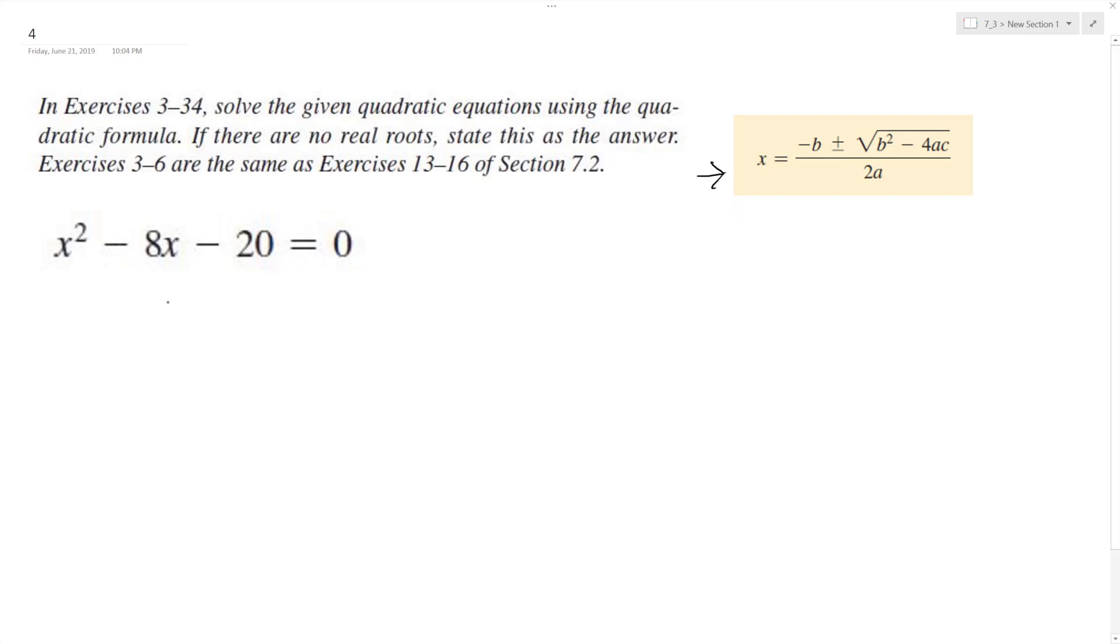So let me do here is I'm going to start with the opposite of B, which is 8, plus or minus the square root of B squared, which is going to be negative 8 squared, 64, minus 4 times a, which is 1, and then C, which is negative 20. So what we end up here with, and then over 2a, which is 2 times 1.